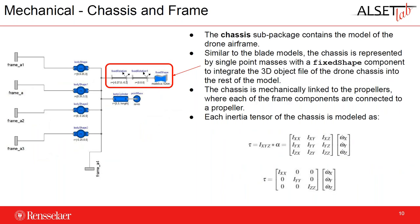We also have a chassis model to model the body of the drone. This chassis sub-package contains the model of the drone's airframe, modeled similarly to the blade models — everything is single-point masses denoted by body shape components. We have a fixed shape component that allows us to integrate a 3D object file of the drone chassis for animation and simulation. The chassis is mechanically linked to each of the propellers, and the inertia tensors of the chassis are modeled as the equations shown in the matrices below.